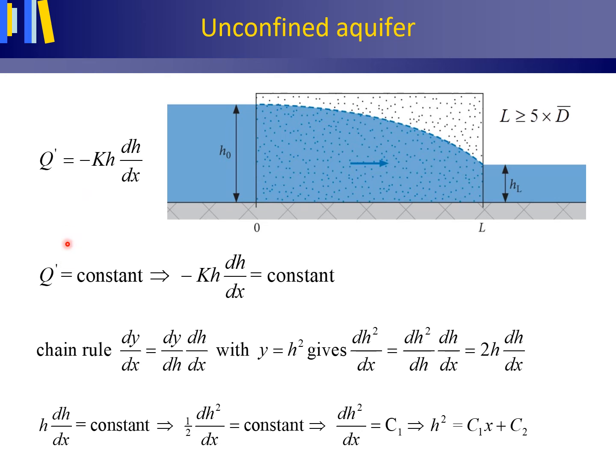Combining continuity Q' is constant and Darcy's law gives this equation, which we can solve mathematically using the chain rule as stated here.